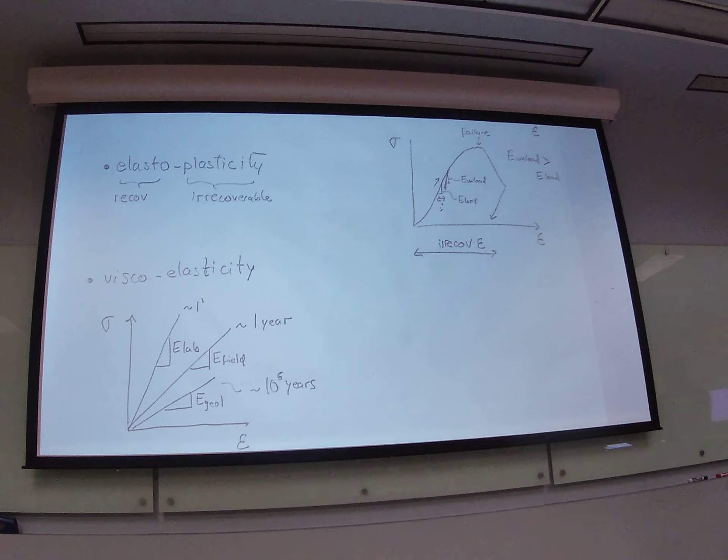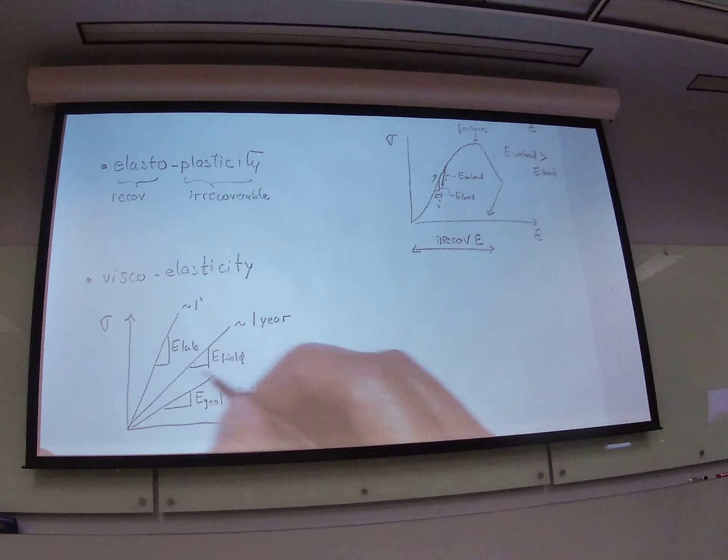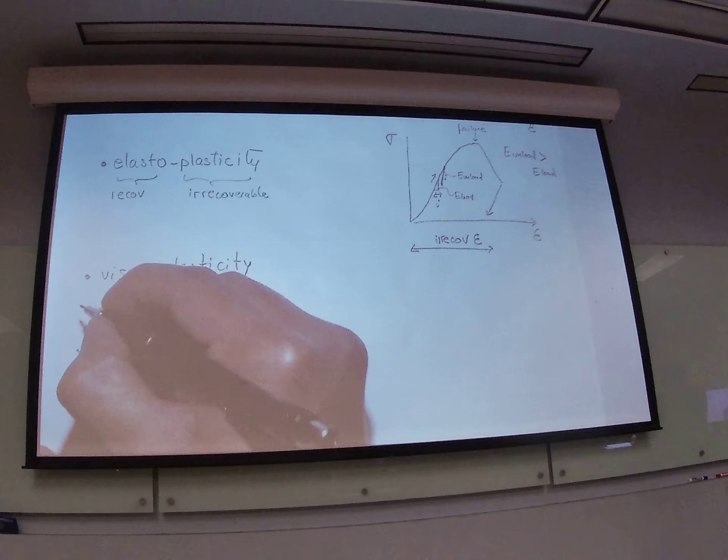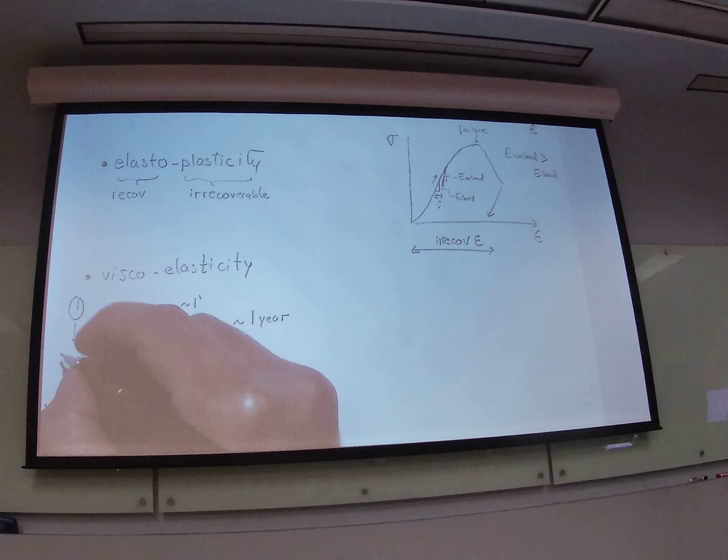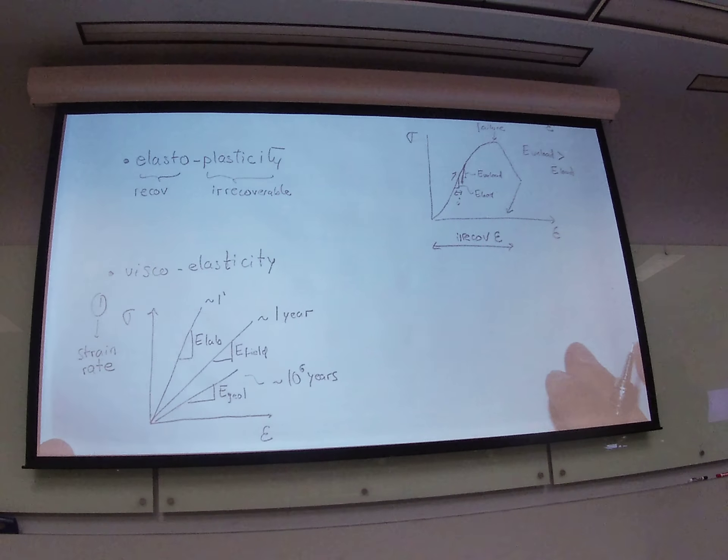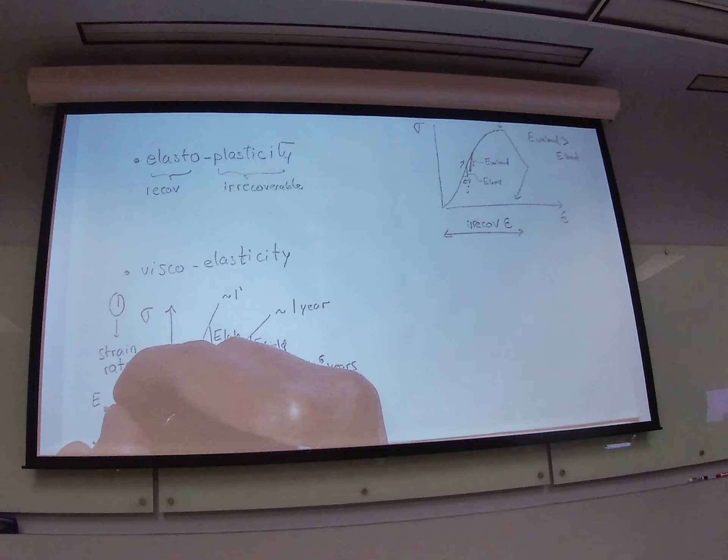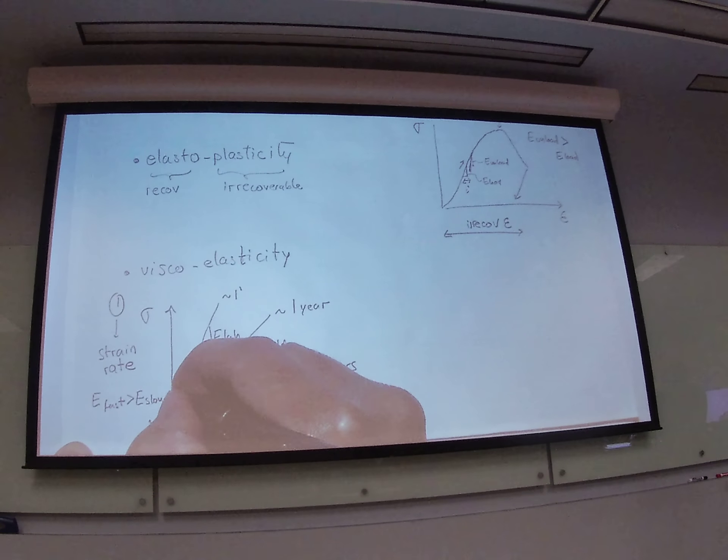So just to summarize this type of viscoelasticity, there are three forms in which we see viscoelasticity phenomena. One, let's put this number one over here, is related to strain rate. And in general, E-fast is going to be always higher than E-slow.